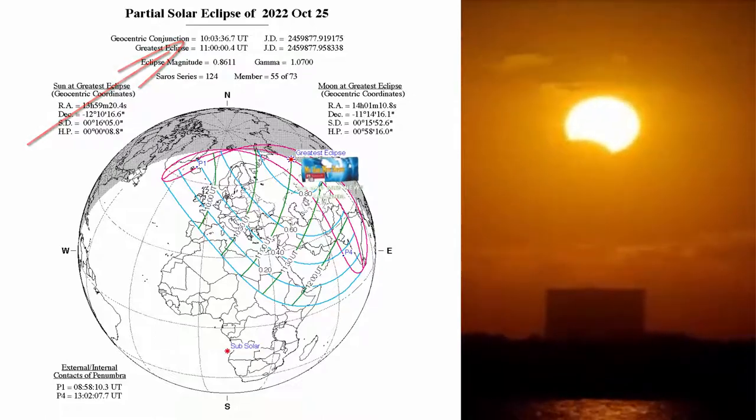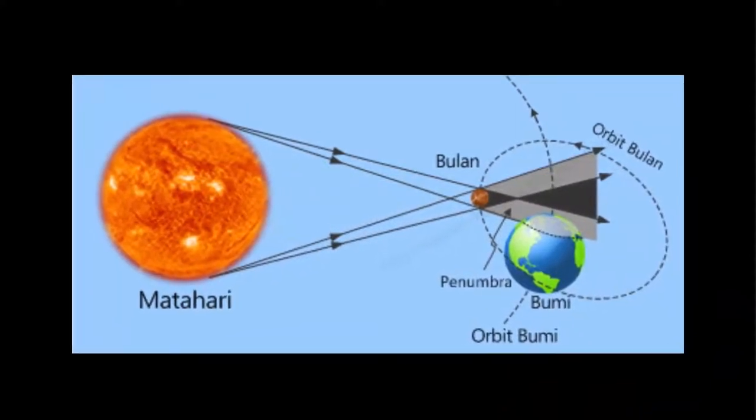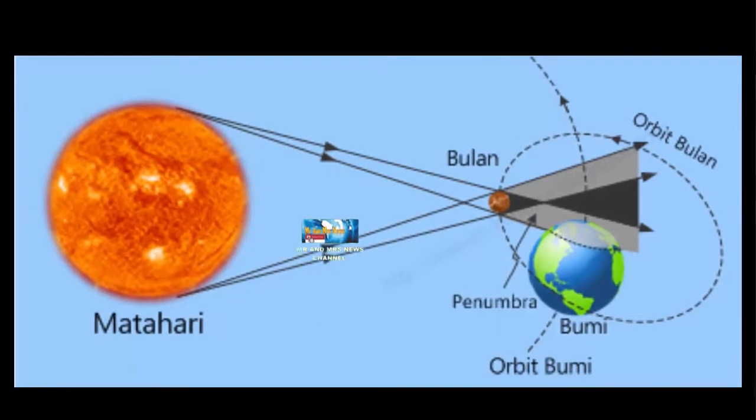Gerhana matahari sebagian terjadi ketika bulan berada tidak tepat di tengah-tengah garis antara matahari dan bumi, sehingga hanya menutupi sebagian matahari.